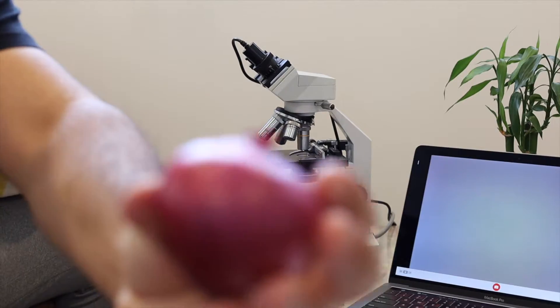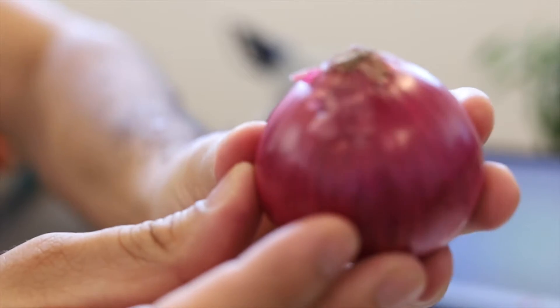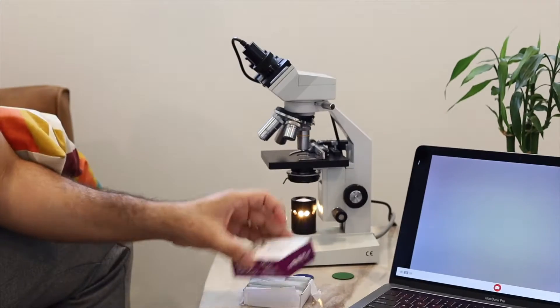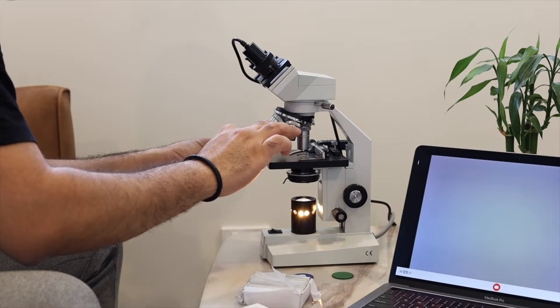Alright, first up we've got a vegetable which makes everyone cry. We'll just peel its skin like this. Just gonna pick up one slide, put it in the microscope, and let's just get going.